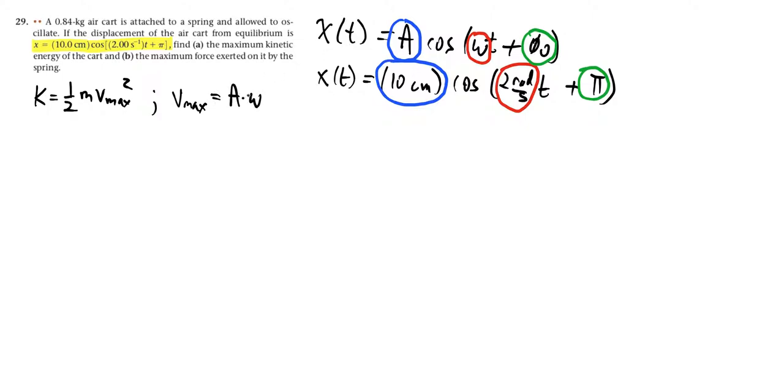So we can write down that the kinetic energy is one-half m times v max, and v max has an a omega quantity squared, so I write down that's one-half m a squared omega squared.